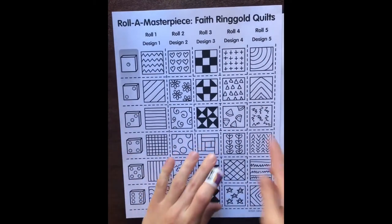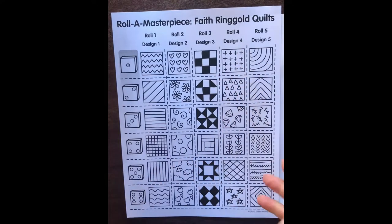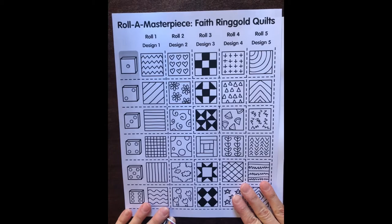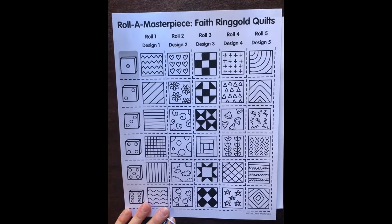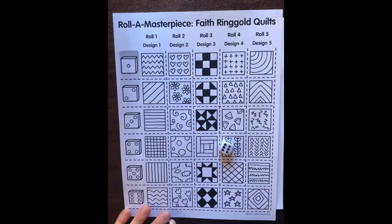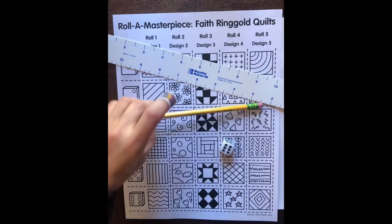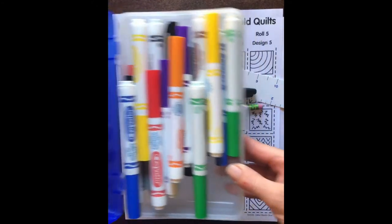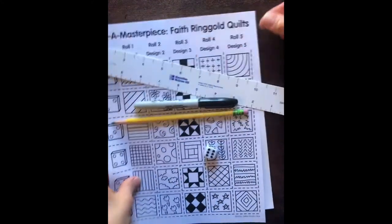This lesson is inspired by Faith Ringgold and her storytelling quilts. You're going to need this piece of paper that you can print out, a dice, ruler, pencil, Sharpie marker, and of course something to color with like markers or crayons, and a piece of white paper to make your artwork on. Get your materials and let's get started.